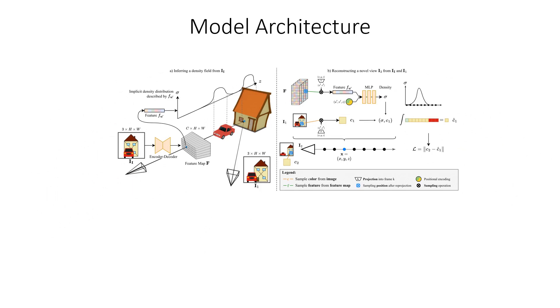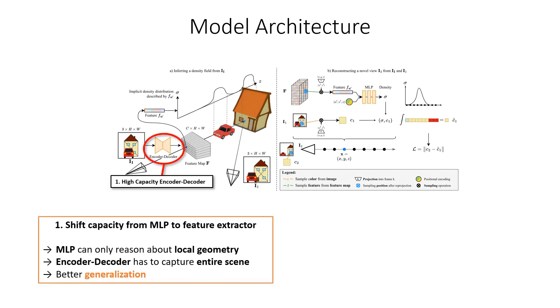Compared to other related works, for example PixelNerf, there are two main differences in our proposed architecture. First, we designed the MLP to be very lightweight and give the encoder-decoder a much higher capacity. Through this bottleneck, the MLP cannot reason about global scene properties and it only deals with local geometry.